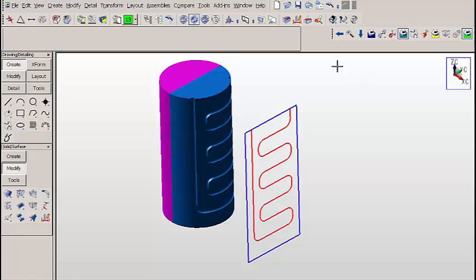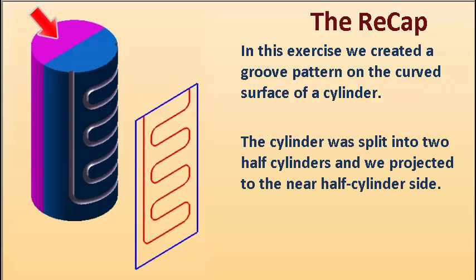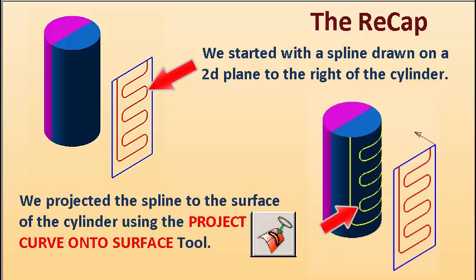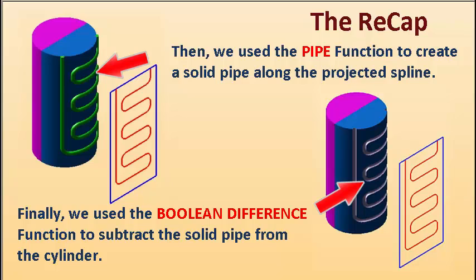We'll use the delete icon to delete the spline so we can clearly see the groove on the cylinder. And that's all there is. So let's recap: in this exercise, we created a groove pattern on the curved surface of the cylinder. The cylinder was split into two half cylinders, and we projected to the near half cylinder side. We started with a spline drawn on a 2D plane to the right of the cylinder, projected it to the surface using the project curve onto surface tool, used the pipe function to create a solid pipe along the projected spline, and finally used the boolean difference function to subtract the solid pipe from the cylinder.